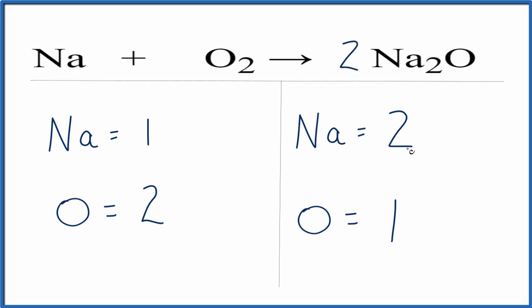One times the two. That means I now have two oxygens, and those are balanced, but I have the two here times the two. So now I have four sodium atoms.